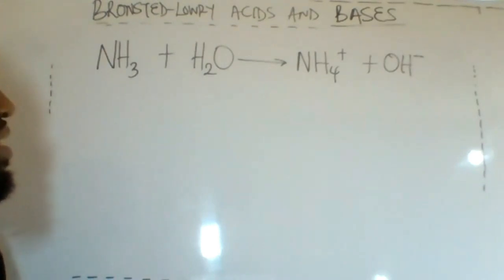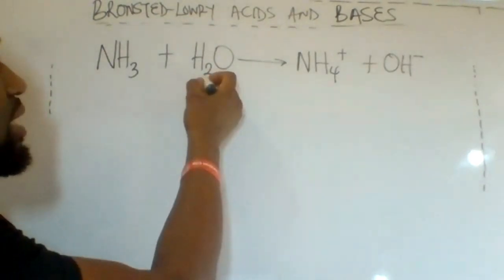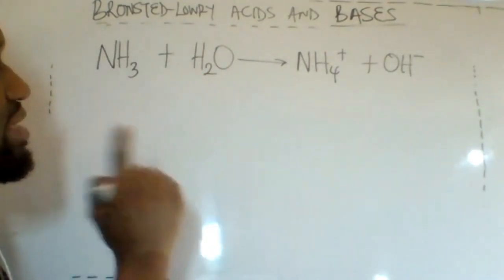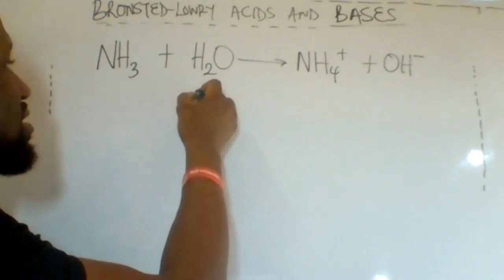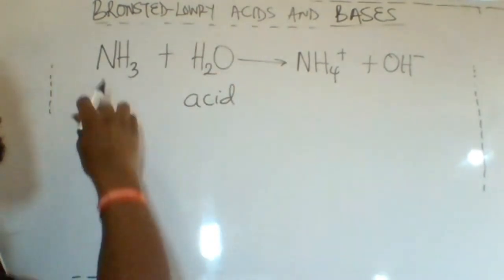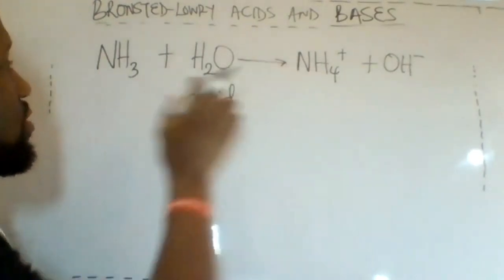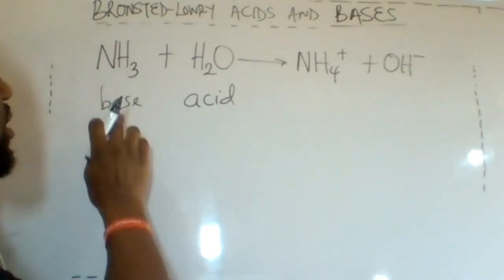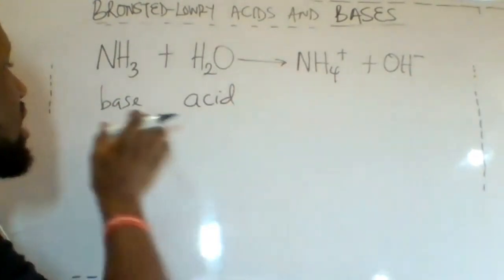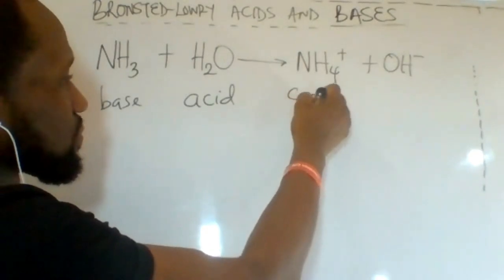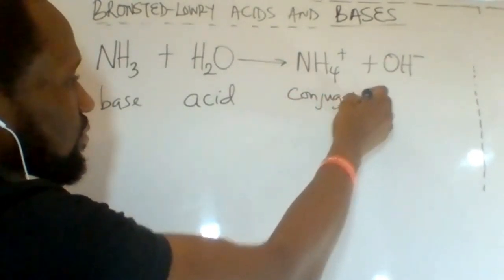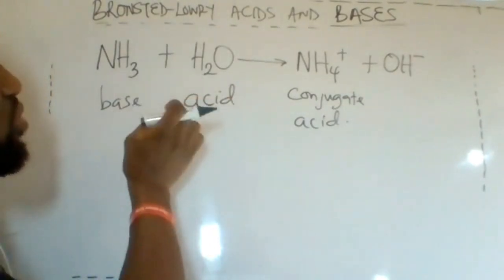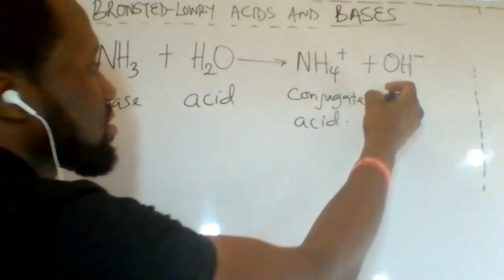In our second example, water becomes OH⁻ on the right, so water has donated a proton. In this case, water is the Brønsted-Lowry acid. But NH₃ becomes NH₄⁺, so it has accepted a proton, making it the Brønsted-Lowry base. The product formed from this base is called the conjugate acid, and water releasing the proton to form OH⁻ is called the conjugate base.